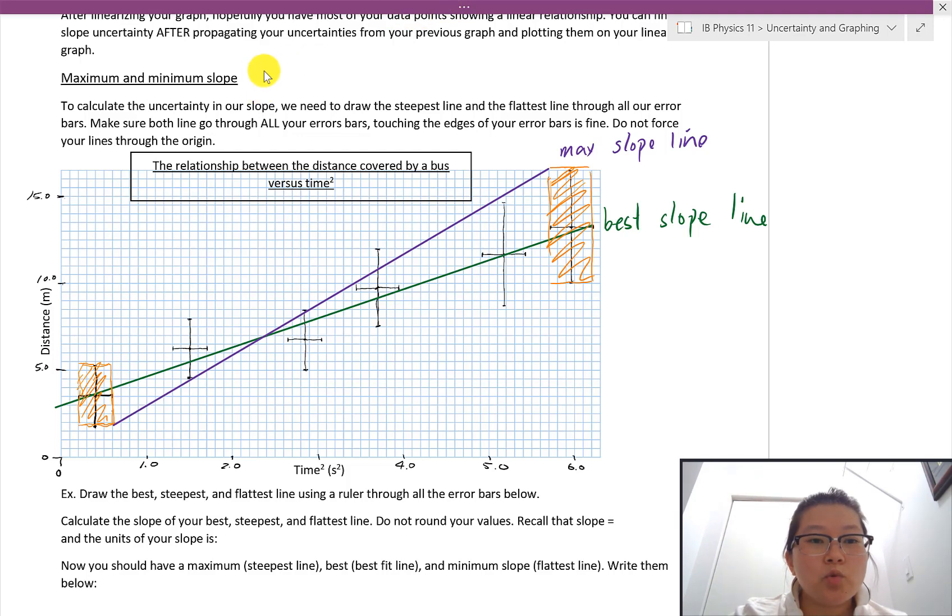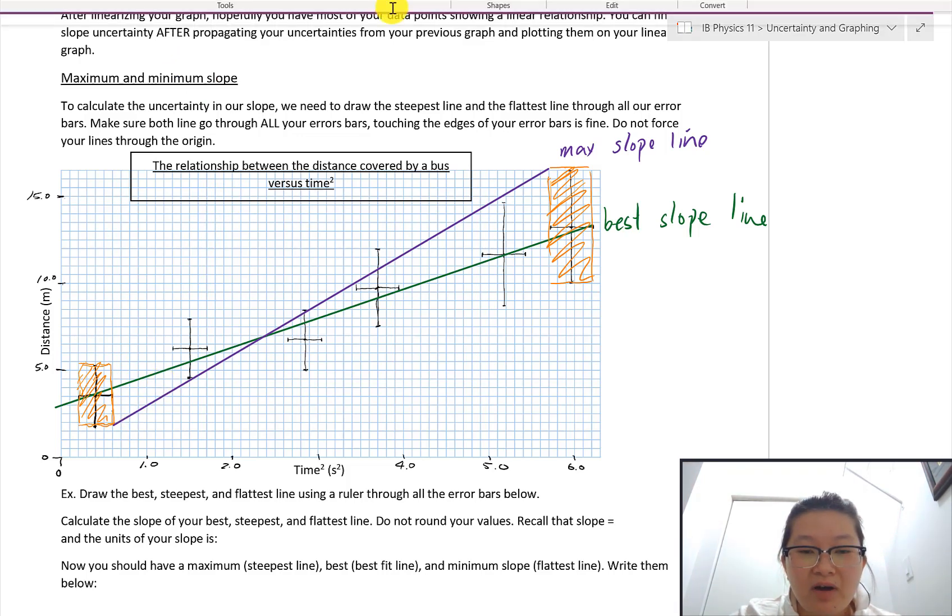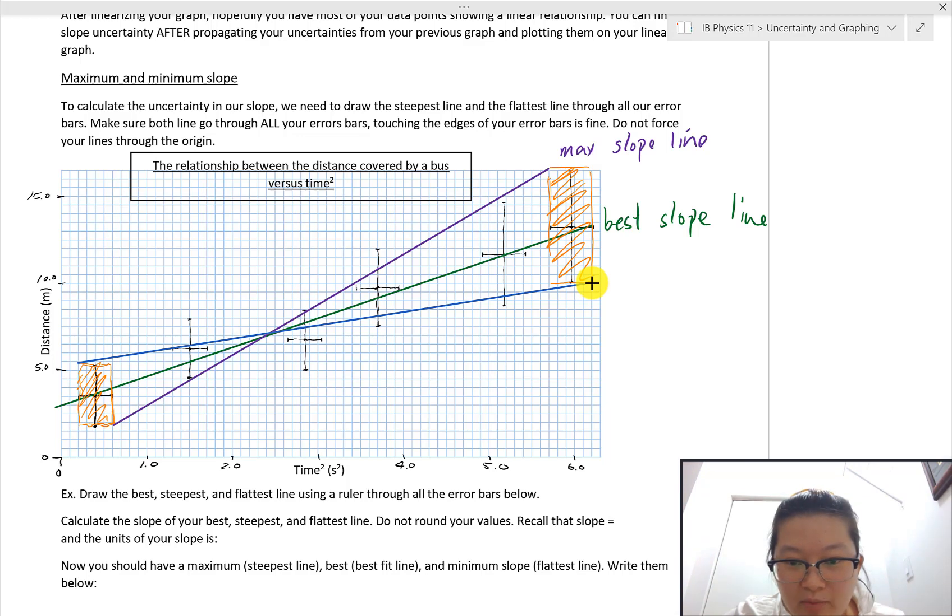The next one we're going to do, we're going to draw our minimum slope line. And that's going to be instead of starting off at the bottom, we are going to start off at the top and I'm going to start at the top left corner here of my error box. And then I'm going to go to the very bottom of my error box. But it's going to be on the right end of my last error box over here.